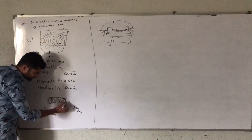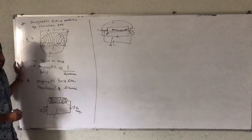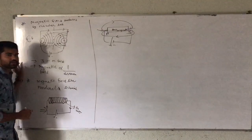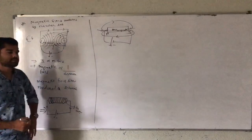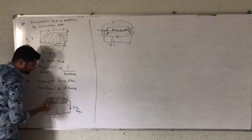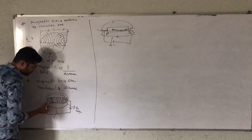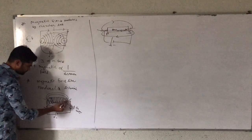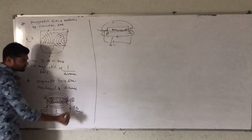This solenoid is connected with a battery — positive and negative end — and electricity passes through the solenoid. We observe that this solenoid circular cylindrical pipe works as a magnet and produces magnetic field lines when electricity passes. It creates a magnetic field, and we observe the magnetic field lines. This is the north pole, and this is the south pole.